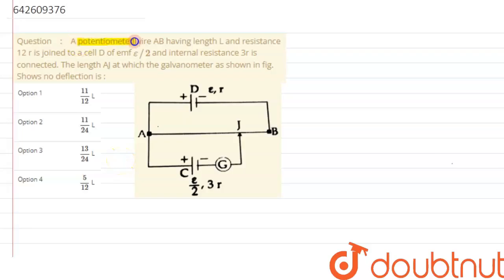A potentiometer wire AB having length capital L and resistance of 2Lr is joined to a cell D having EMF epsilon by 2 and internal resistance is given as 3r is connected.